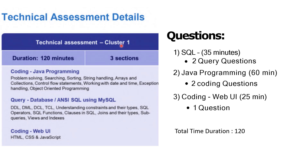In Cluster 1, there are a total of 5 questions asked which belong to 3 different sections. Cluster 1 includes Java Programming, Query Database and SQL using MySQL, and Coding WebUI. There are total 5 questions asked in Cluster 1.